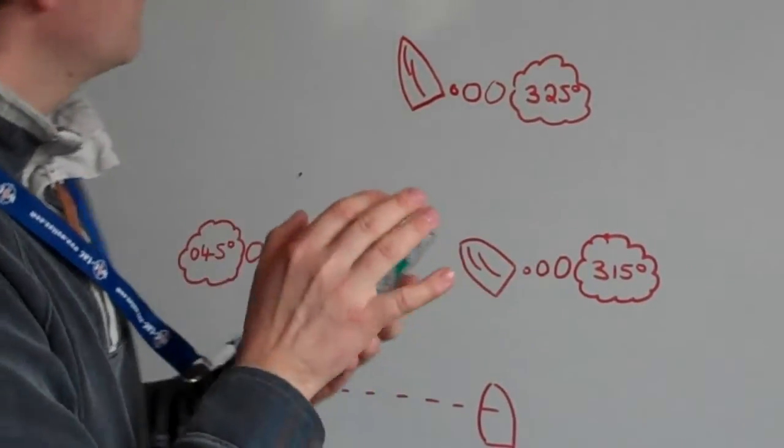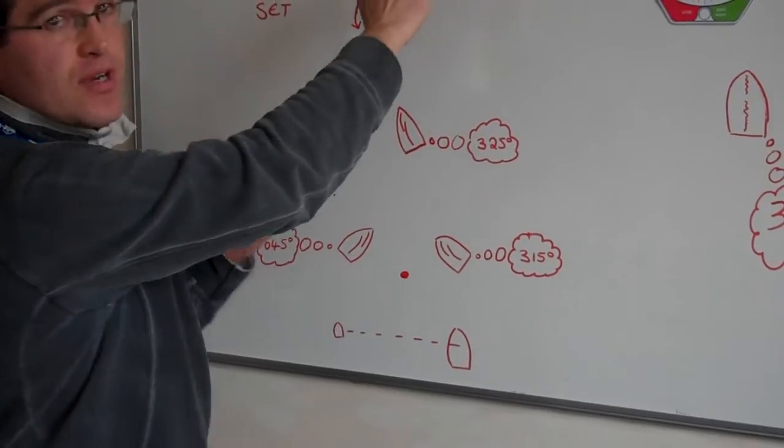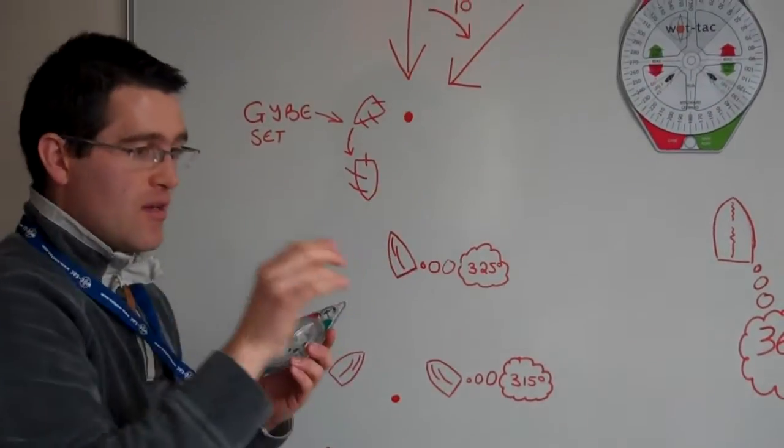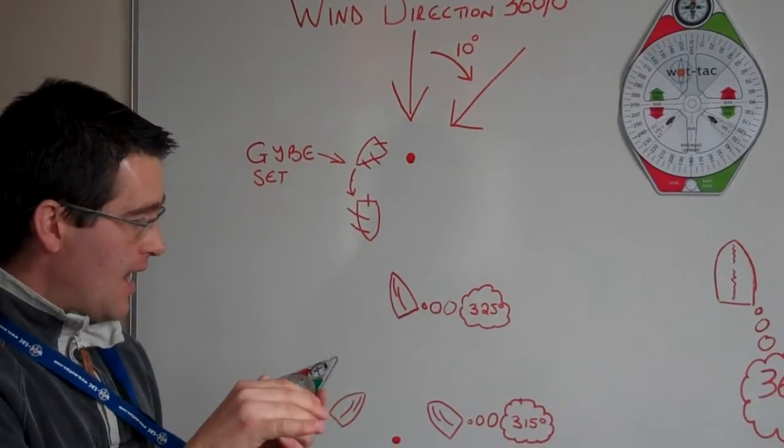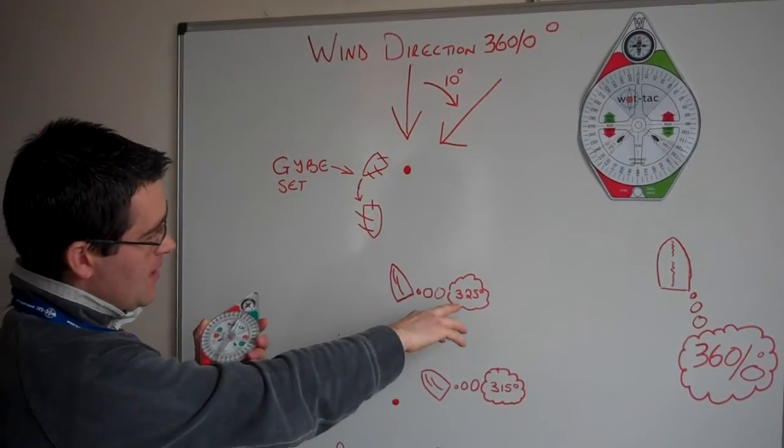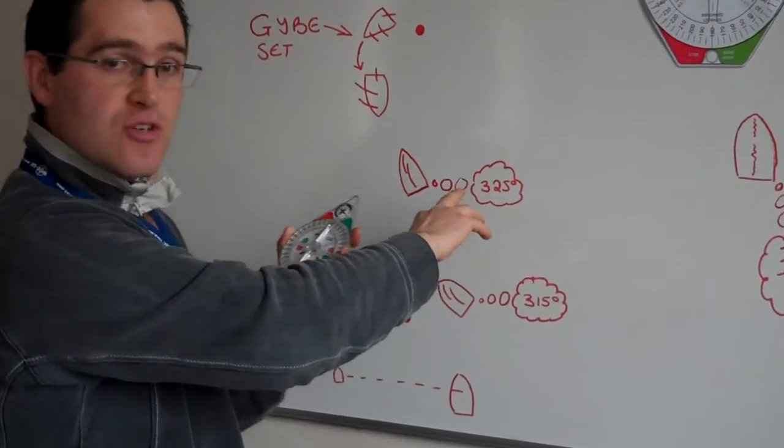Now suddenly we have a wind shift and the wind shifts right by 10 degrees. The first thing we do is we look at our new compass bearing and the compass bearing is telling me that I'm now not sailing at 315 degrees, I'm now sailing at 325 degrees.